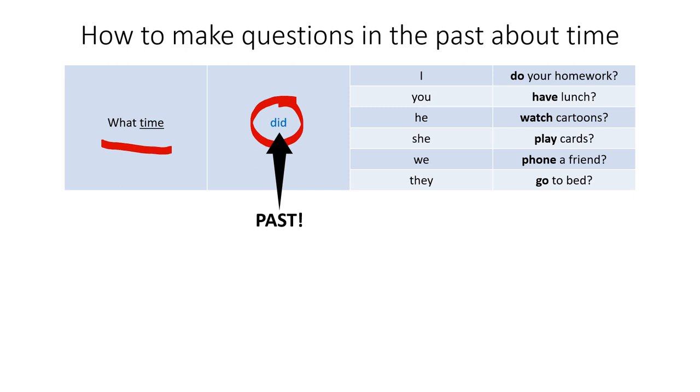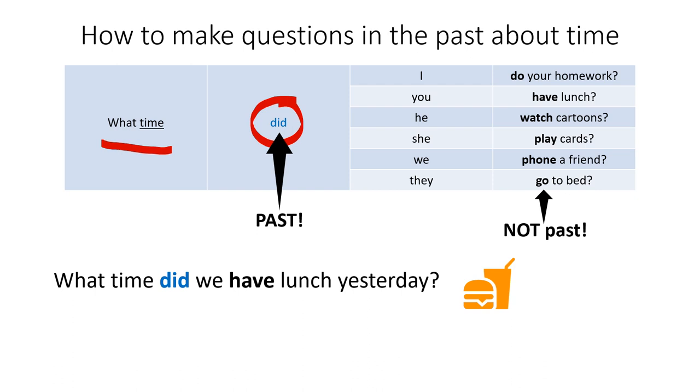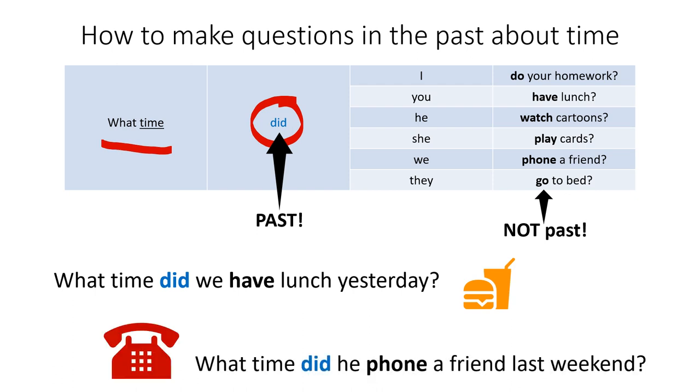And the other verbs are not in the past when we are asking the question. So we could say, what time did we have lunch yesterday? Or, what time did he phone a friend last weekend? Did is in the past, so the other verb is not in the past.